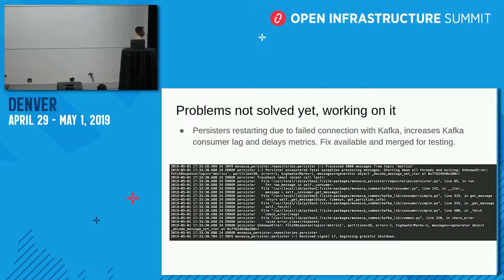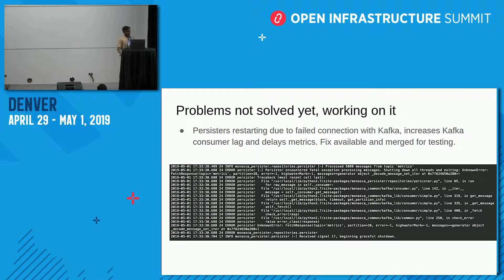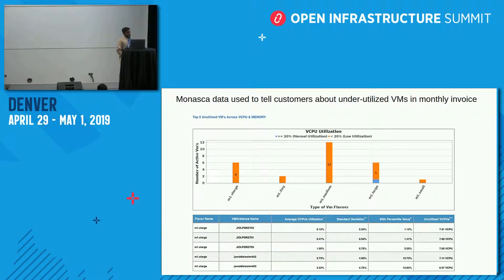The main ongoing challenge is with the Persister, and we are working with the community to upgrade Kafka to the latest version, which should resolve the issue. The current workaround is to scale up and scale down the service. When the Kafka latency increases significantly, increasing the values brings latency back down and restores real-time metrics. We have also utilized Monasca for our billing project, using the output data to bill our index projects.